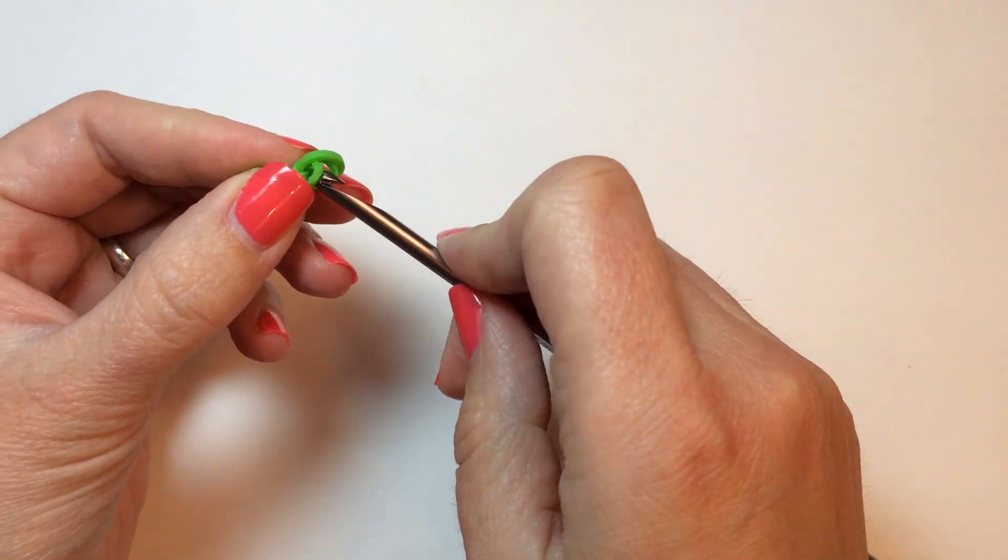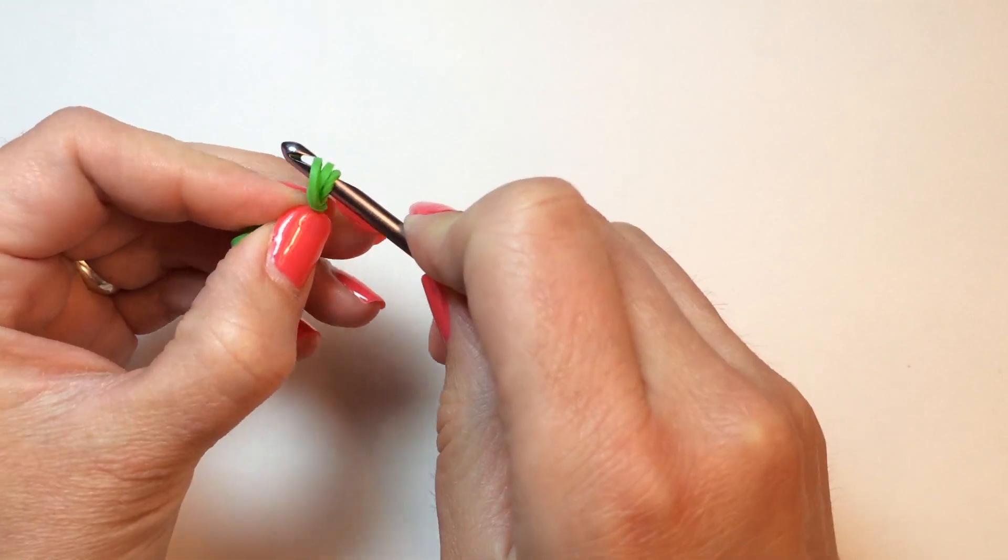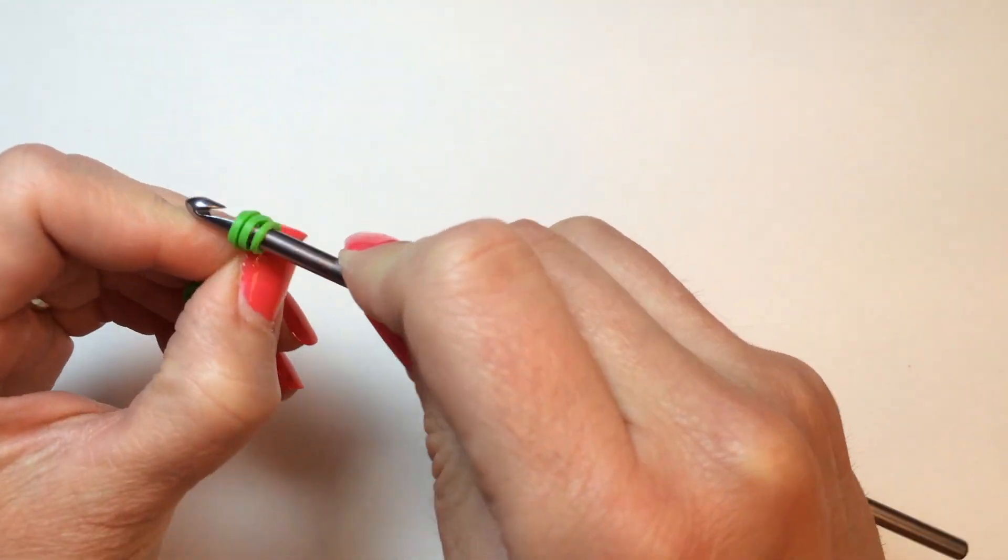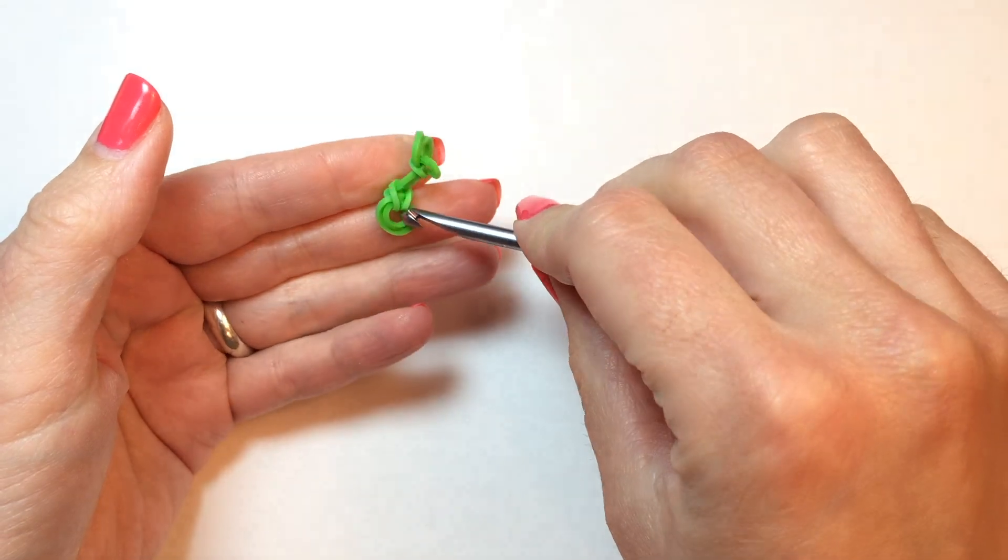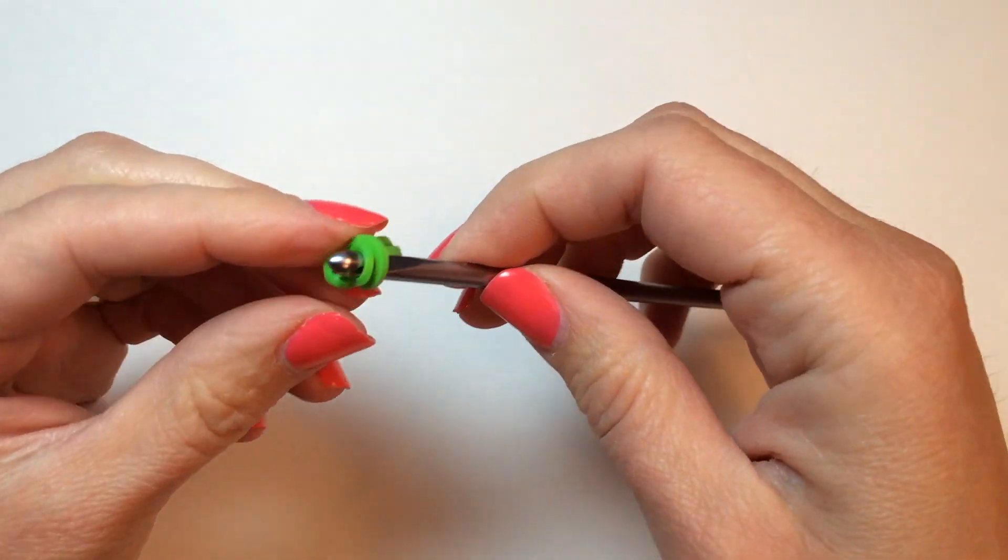And you may need to just stick your hook into these cap bands to get them evened out once you've made those knots. See, that's two, the third one.